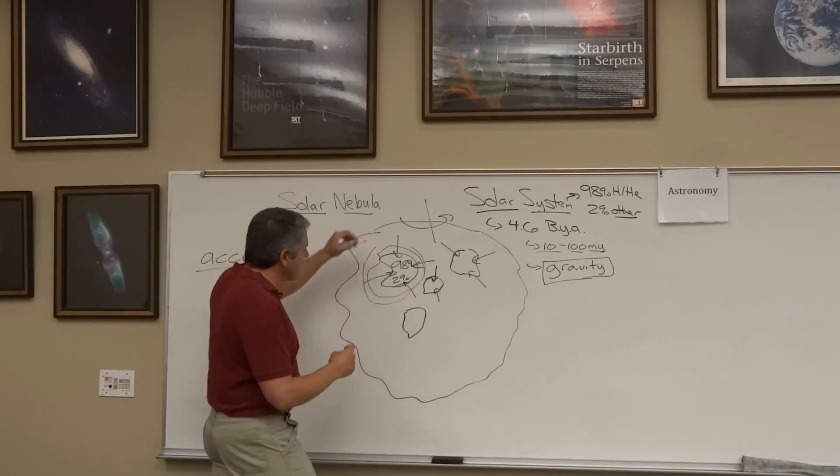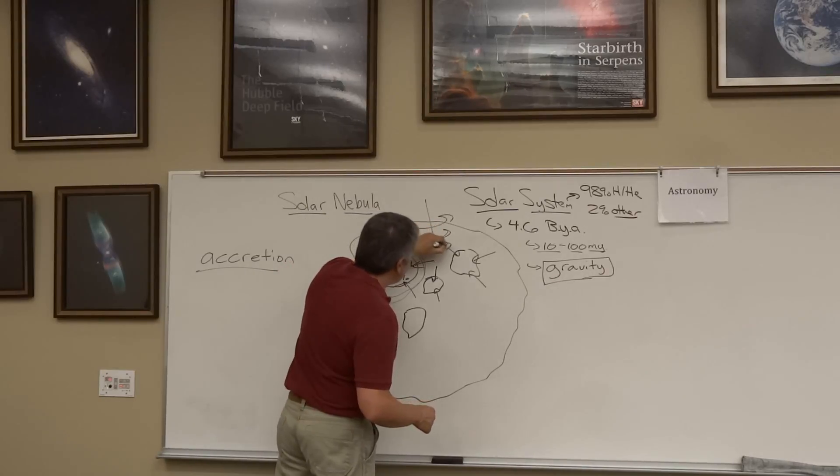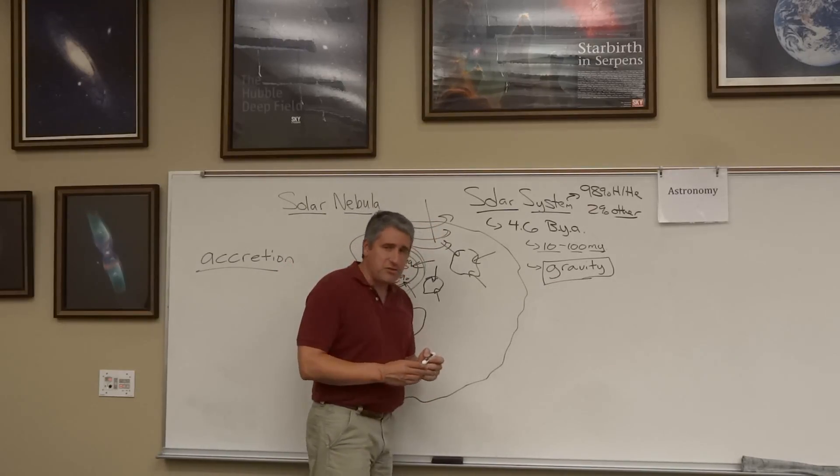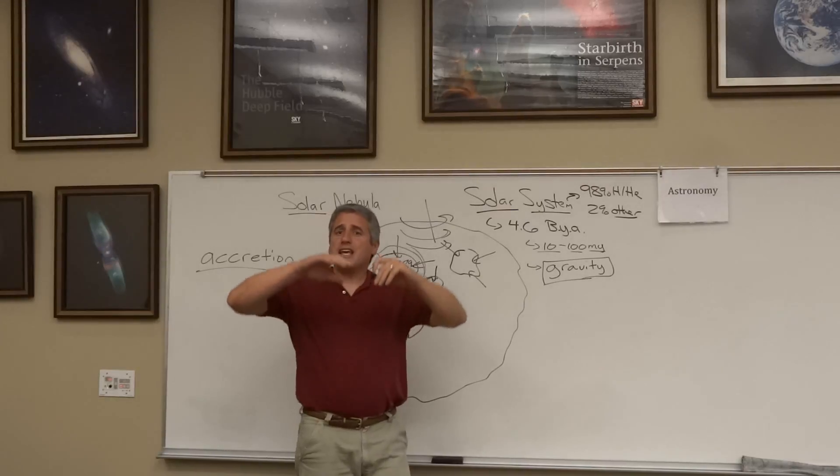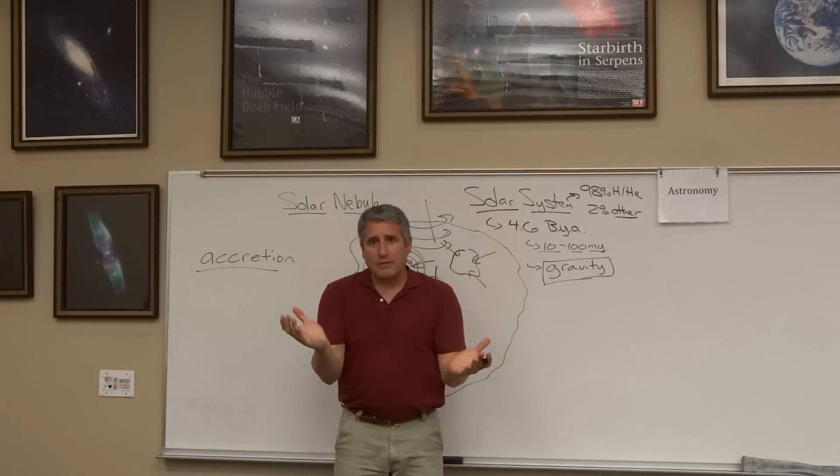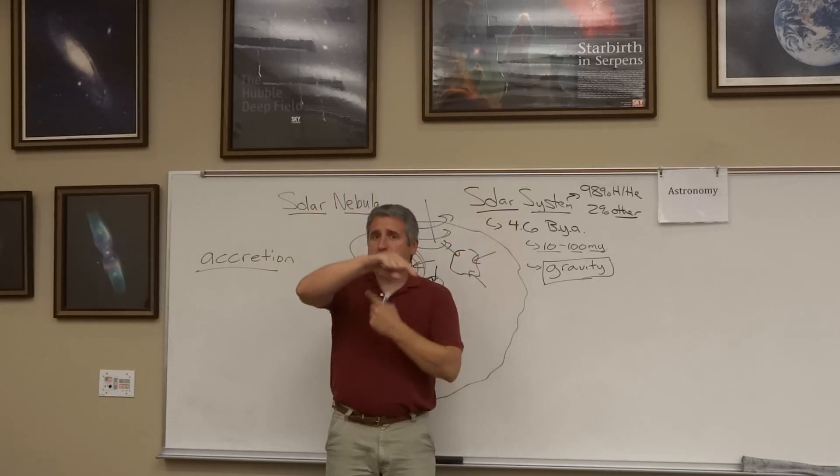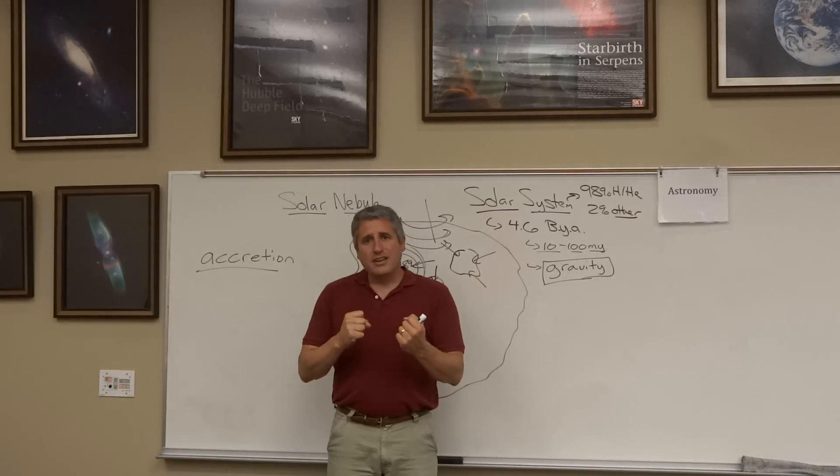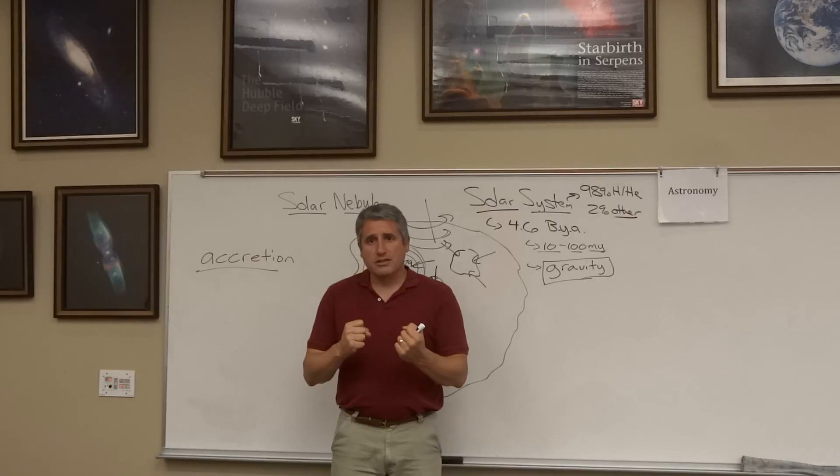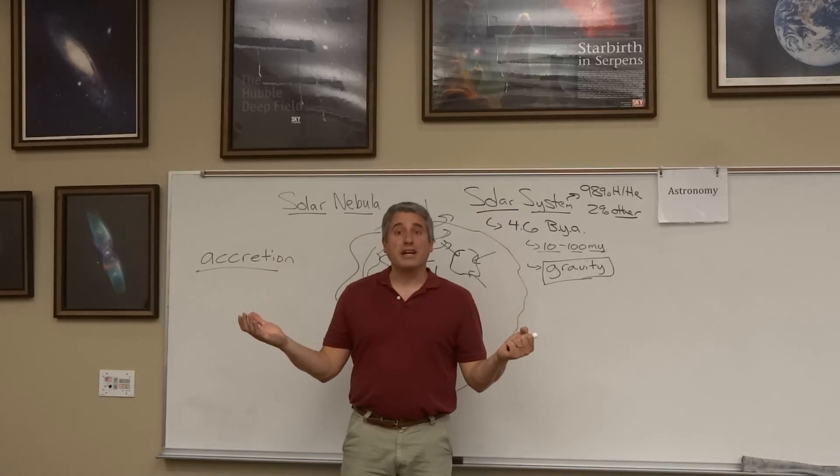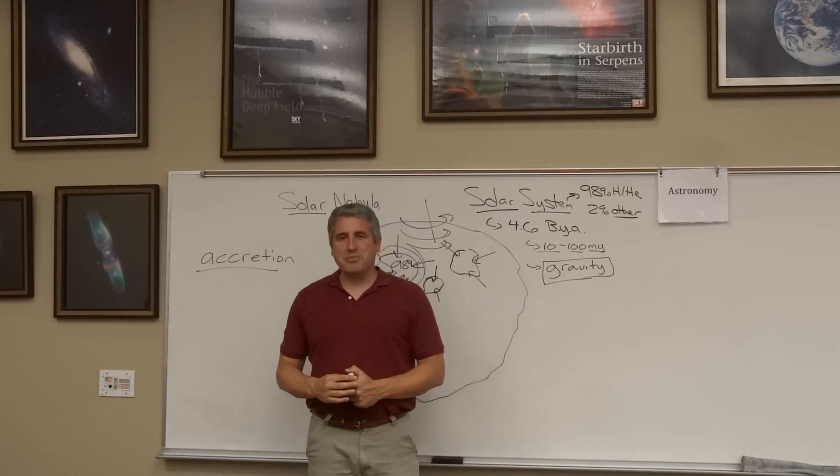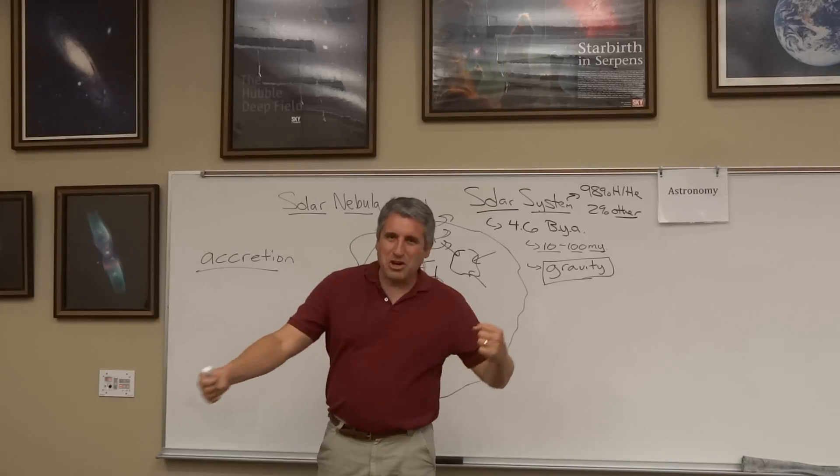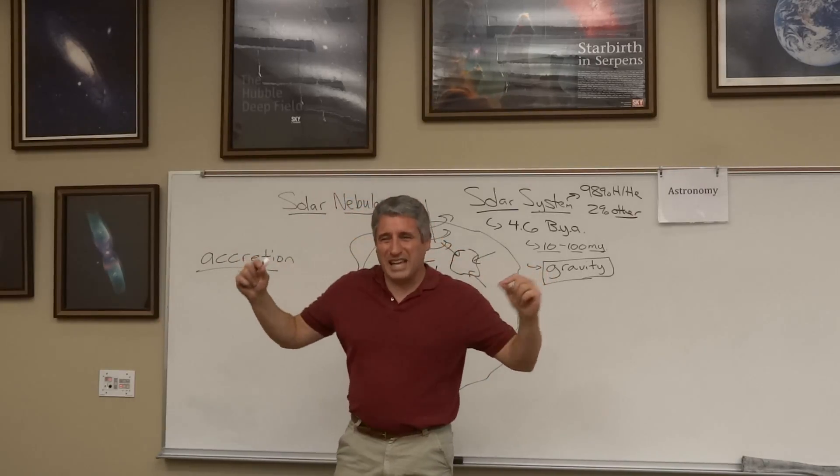So what happens here is this begins to spin faster and faster. You take what started off as a spherical object, you spin it faster and faster as accretion takes place, and it flattens into a disc. The pizza dough effect. Just like at the pizza parlor, someone takes a bit of dough and spins it up in the air and flattens into a disc.